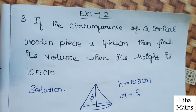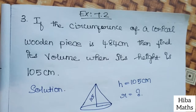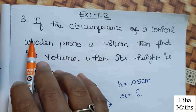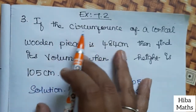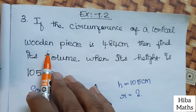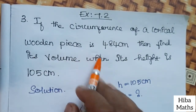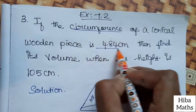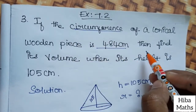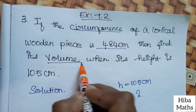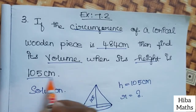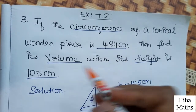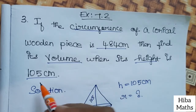Hello students, welcome to Hibamax. 10th standard maths exercise 7.2, 3rd question. If the circumference of a conical wooden piece is 484 cm, find its volume when its height is 105 cm.